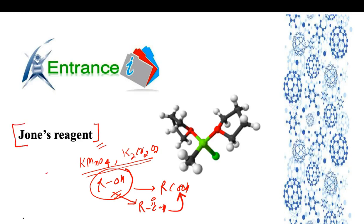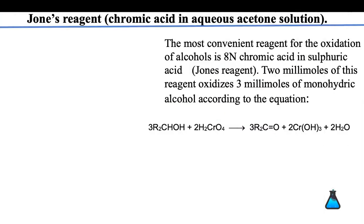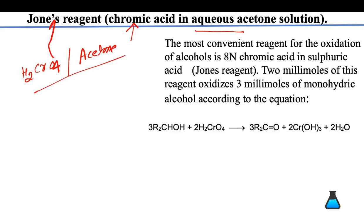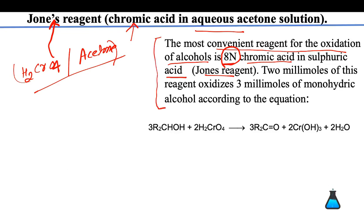So why is Jones' reagent a specific oxidizing agent? Jones' reagent is chromic acid (H2CrO4) in aqueous acetone. This is what we call Jones' reagent, and it is the most convenient reagent for the oxidation of alcohols. It is 8N chromic acid in the presence of sulfuric acid — it is not required to remember the normality. This is the actual balanced reaction.